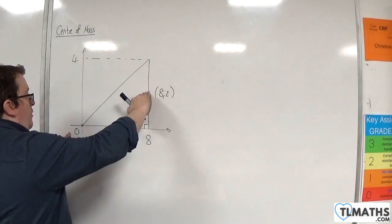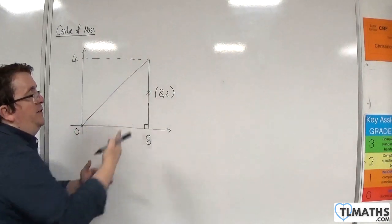The median is going from the origin to that point, and the centroid will be two-thirds of the way along that median line.